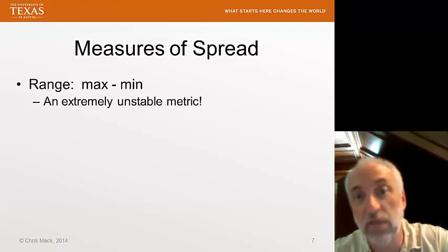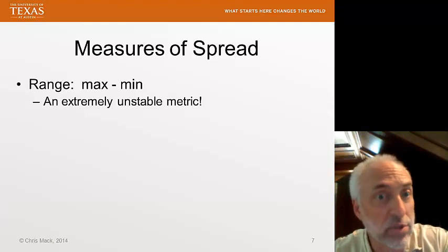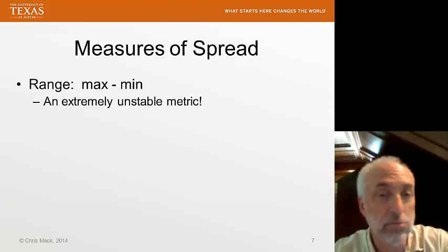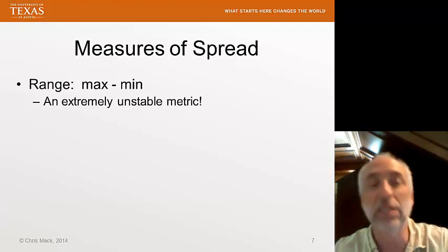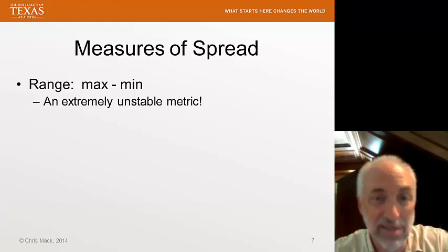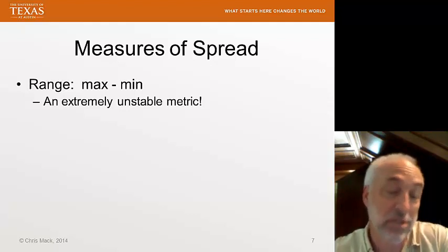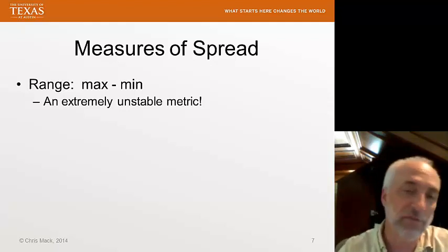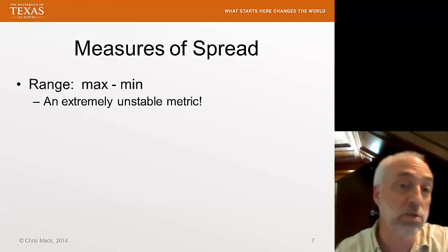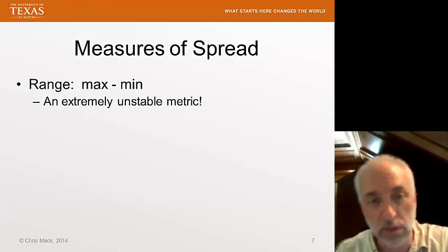You collect a data set of, say, 100 data points, and how many numbers do you use to calculate the range? Only two, right? You completely ignore the other 98 measurements. The result is a measure that is very sensitive to, obviously, just two data points. And random variation in those two data points will be large, and so random variation in the range will be large as well.